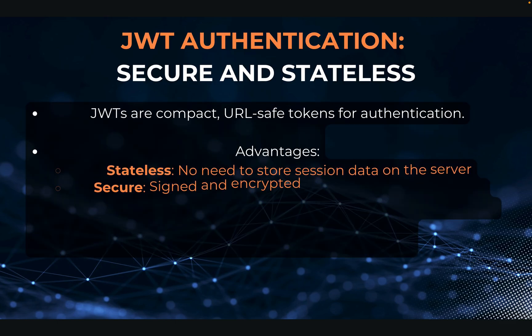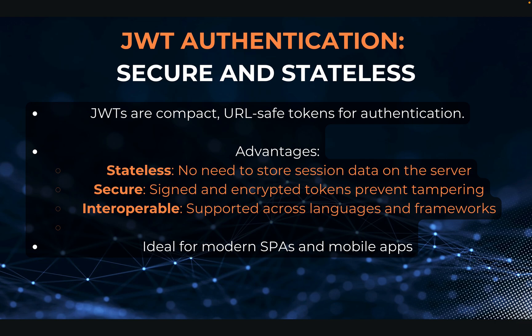The next skill is JSON web tokens, which are secure and stateless. JSON web tokens are compact, URL-safe tokens for authentication. The main advantages are: they are stateless, so you are not required to store any session data on your server; they are secure because they are signed and encrypted; and they are interoperable — they work with every language and every modern web framework. They are ideal for modern single-page applications and mobile apps. For a smaller app, there is no need for any complex sign-up or sign-in method, so using JWT tokens would be my suggestion.